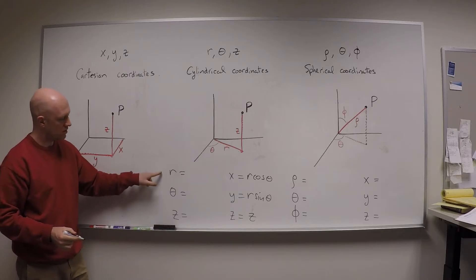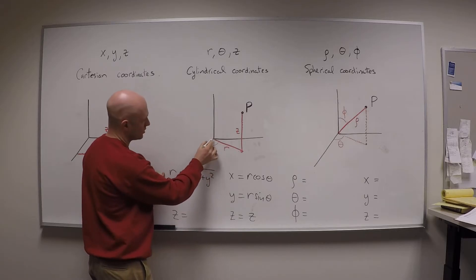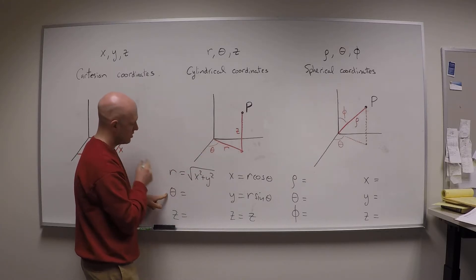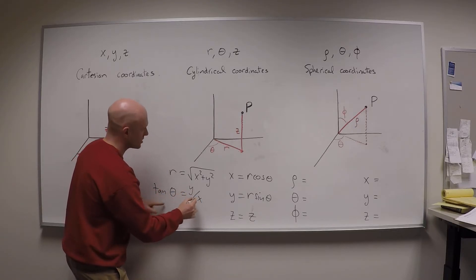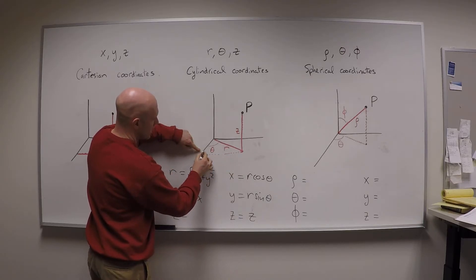Same deal here. We have r is the square root of x squared plus y squared. That's the total distance from the origin to the points projection in the xy plane. Theta again, well the tangent of theta is again y over x.